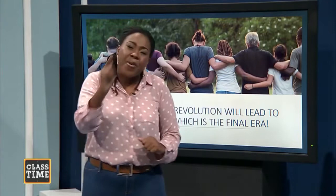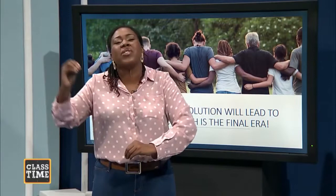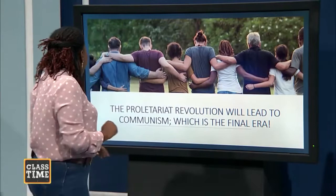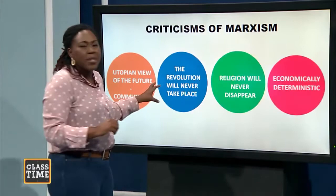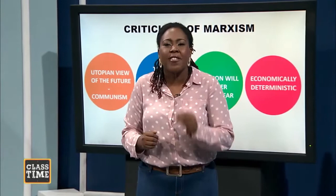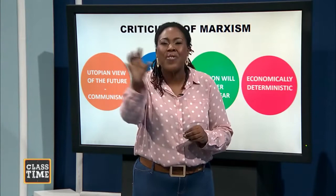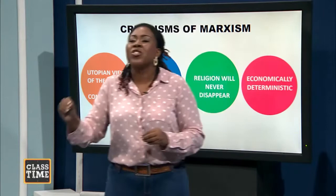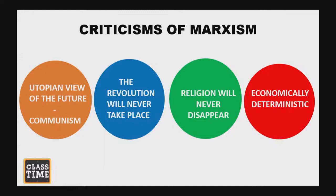Now, every perspective has its critics, and Marxism is no different. The first criticism is that Marx has a utopian view of the future — a utopian view of communism. Remember, the criticism of the functionalists is that they are utopian as well. Whereas the functionalists have a utopian view of the present, the Marxists have a utopian view of the future, because Marx takes it for granted that we're all going to come together and live in a society of equality where everybody shares everything. The critics say that is rubbish.